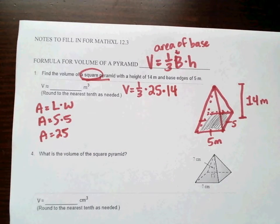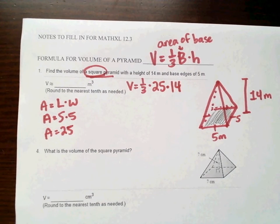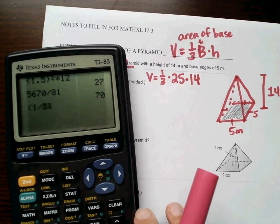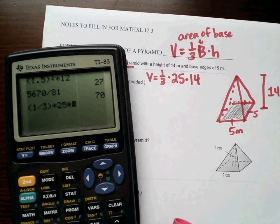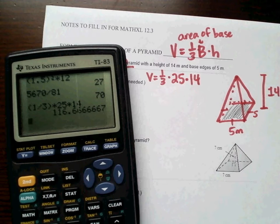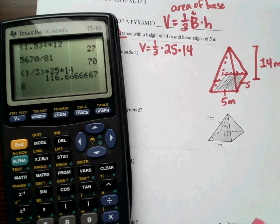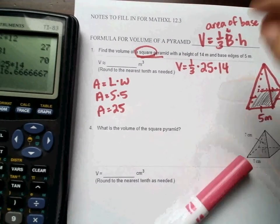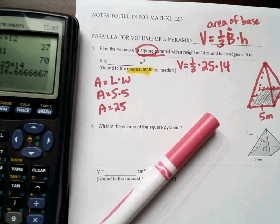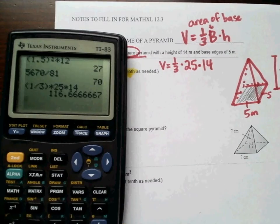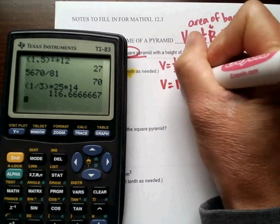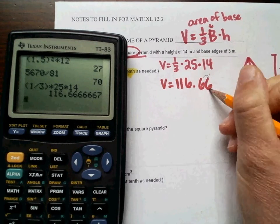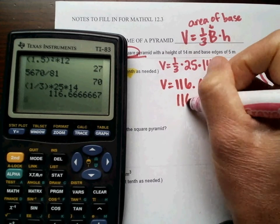And then we just multiply them together, and we need to make sure we round appropriately. So, one-third times 25 times 14. I get 116.6 repeating, 0.6 repeating, which is two-thirds. They say round to the nearest tenth. That means one digit behind the decimal. So, if I get 116.66, then I look here, that makes this go up to a 7. So, it's going to be 116.7 meters cubed.